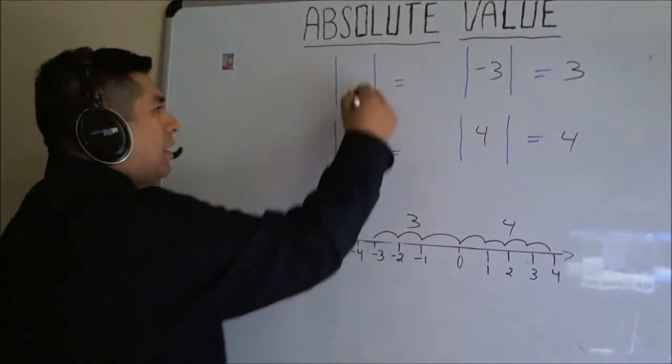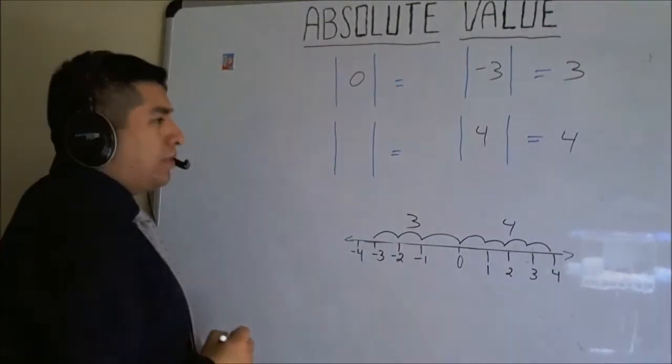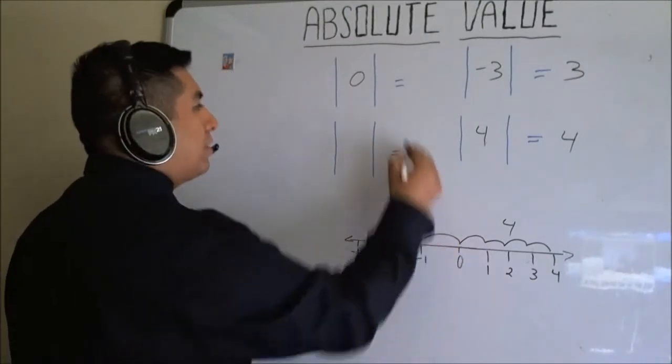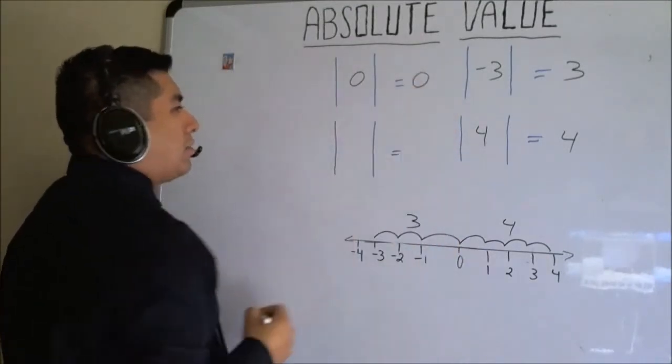Now, what's the absolute value of zero? Zero. Well, what's the distance between zero and zero? Zero units. Therefore, the answer is zero.